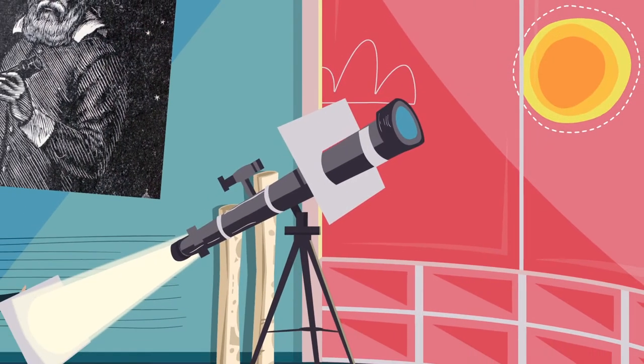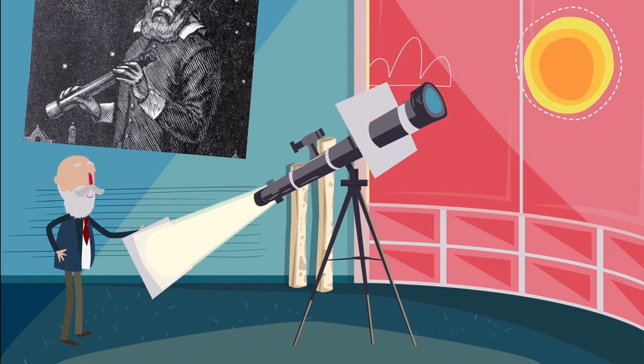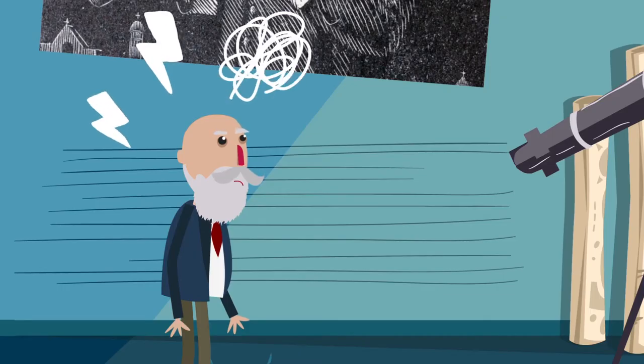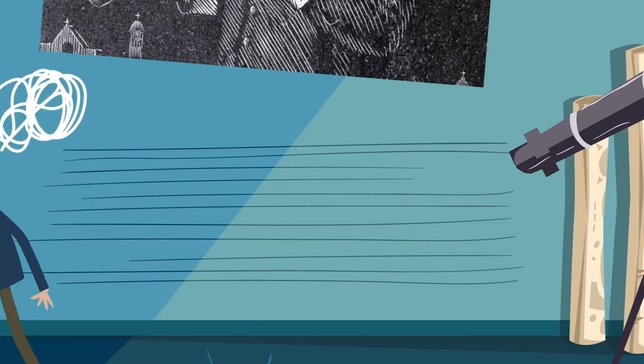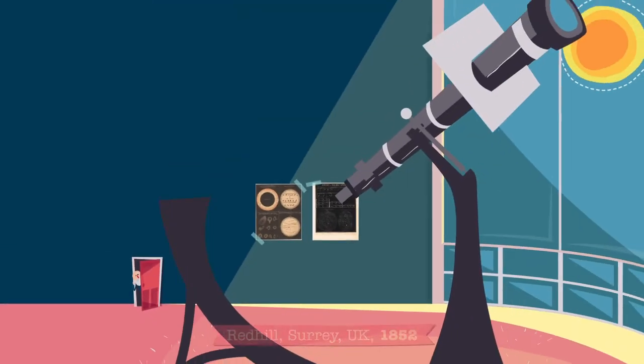Tras graduarse, entró a trabajar en el Observatorio de Durham, desde donde hizo numerosas observaciones. Tras quejarse varias veces por lo viejos que eran sus instrumentos, decidió dimitir y fabricar su propio telescopio.